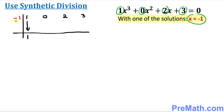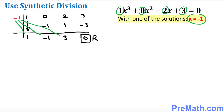We multiply negative 1 times 1, which gives negative 1. Then 0 plus negative 1 gives negative 1. Multiply negative 1 diagonally with negative 1, that gives positive 1. Then 2 plus 1 makes 3. Multiply negative 1 times 3, that gives negative 3. And 3 plus negative 3 gives us a remainder of 0. So now we have 1x² minus 1x plus 3.